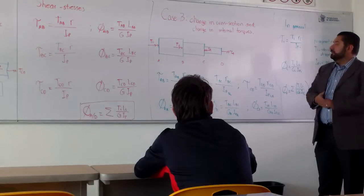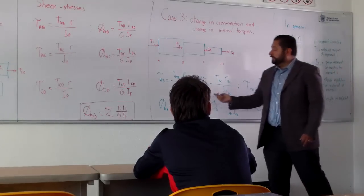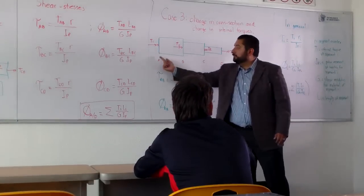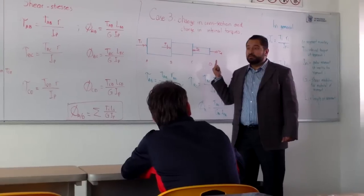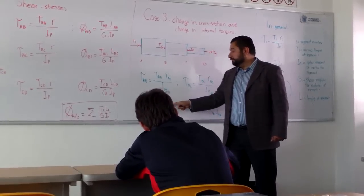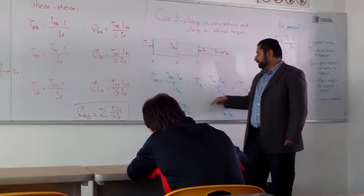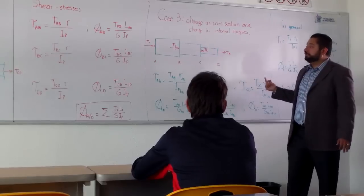Again, when you find the angles, you only use the length of A to B, not the whole length of the bar. It's a common mistake in the exam. People don't know and then they put the total length of the bar in the three values of the angles.